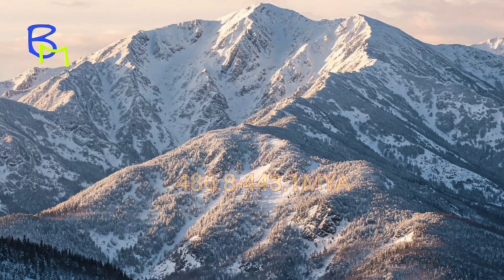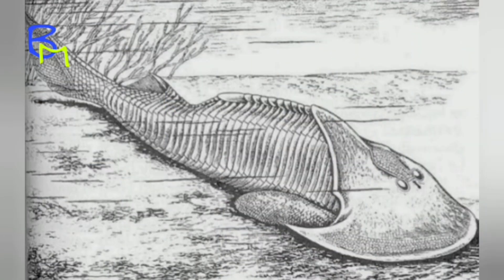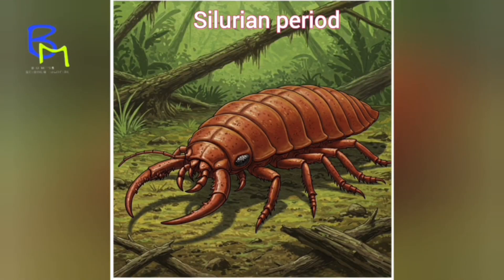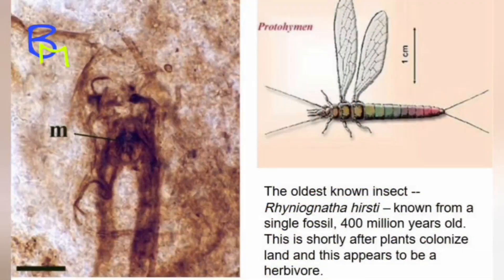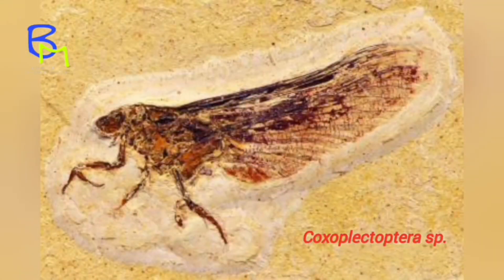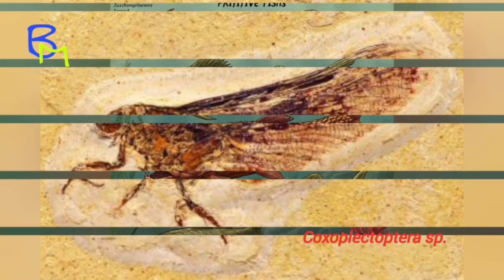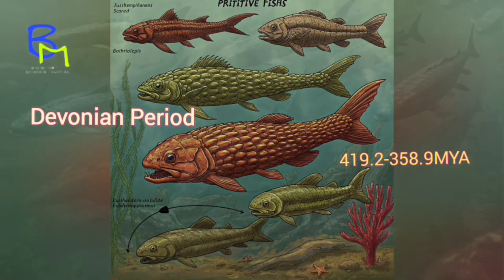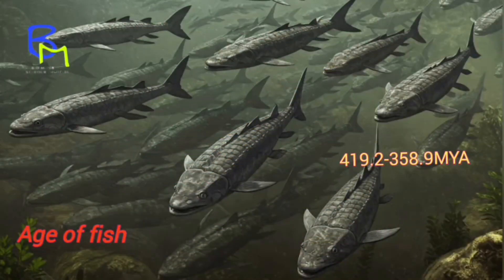The Ordovician period showed abundant marine invertebrates and the appearance of ostracoderms. The Silurian period saw the appearance of the first insects and millipedes, while primitive arachnids and scorpions also appeared, with fish diversity increasing. The Devonian was the age of fish, with amphibian evolution also noticeable.